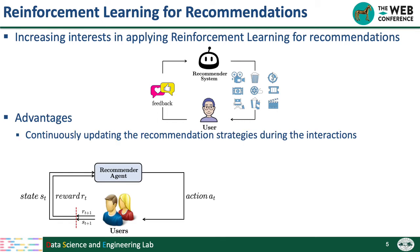Why do we want to introduce reinforcement learning for recommendations? It mainly has two advantages. First, the recommendation policy will be updated continuously according to the user's real-time feedback. For example, if you purchase an item, we will give a positive reward to the system, and the system will reinforce this kind of recommendation policy. But if you skip the items, we will have a negative reward, so basically the system tries to avoid this kind of recommendation policy.